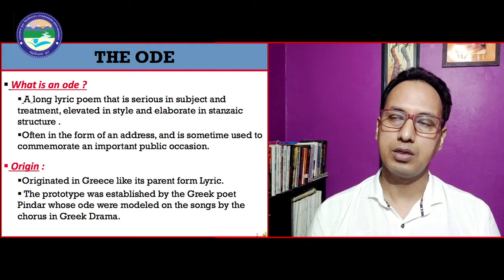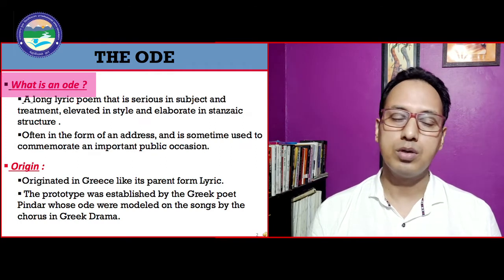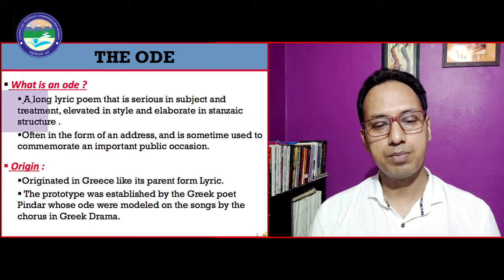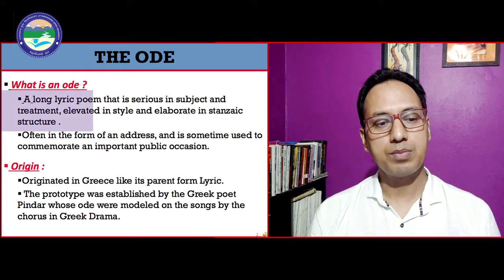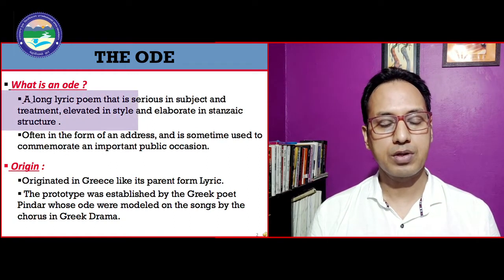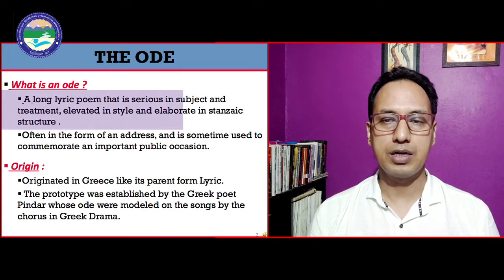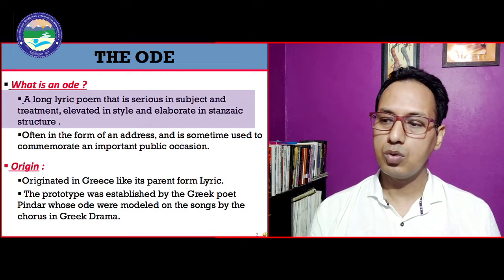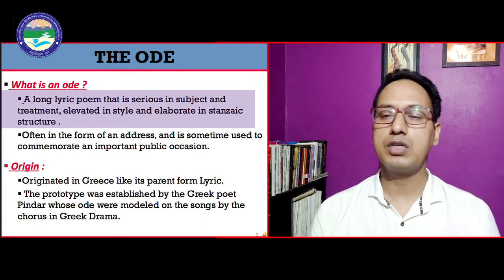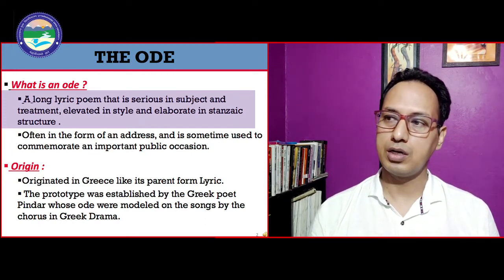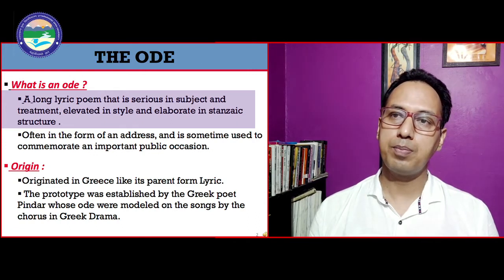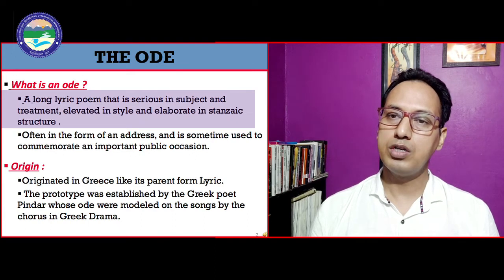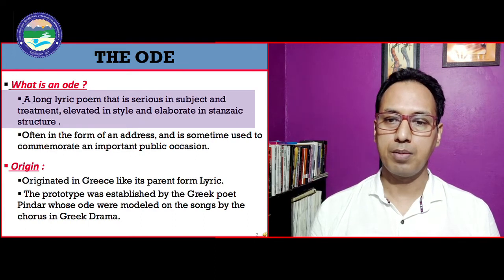So what does an ode mean? An ode is a long lyric poem that is serious in subject and treatment, elevated in style, and elaborate in its stanza structure. The first thing we need to understand about ode is that it is a part of the lyric — lyric is the parent form and ode is one of them.